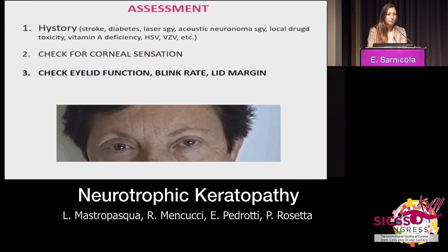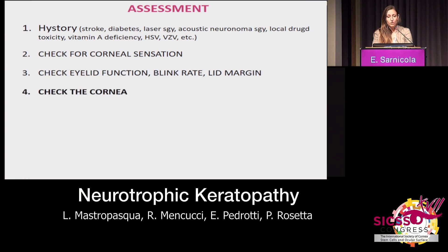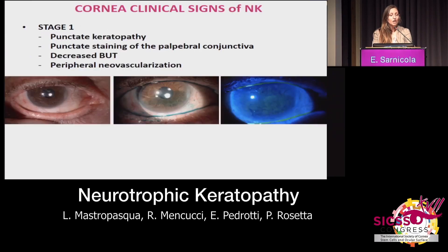It is necessary to carefully assess and check the function of the eyelids, because it might be the cause of any keratopathy, but also the cause of treatment failure in these patients. Then we have to check the cornea and look for the specific signs of neurotrophic keratopathy.